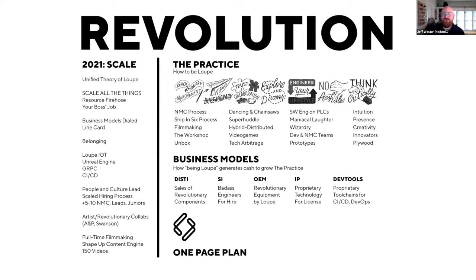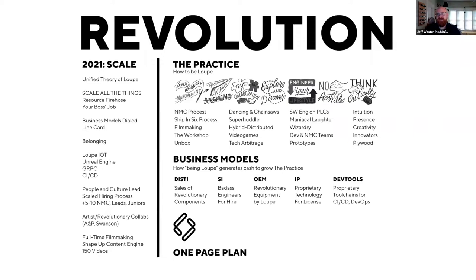This one-page plan should look familiar to all of you. It's an example of how Loop makes money. The revolution drives everything, but Loop has the practice at the center — wizardry, creativity, the workshop. The way you make money is through these arms of business: distribution, systems integration, OEM, IP, and dev tools. Lately we've been pushing into how to create opportunity and awareness for customers to engage in these different business model lines.